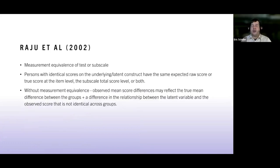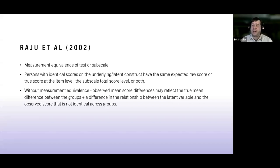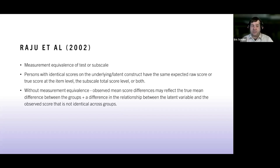From a measurement perspective, we're trying to achieve measurement equivalence — meaning different groupings within a population are using the test and responding in the same way. Persons with the same score on an underlying construct should be responding the same way to the items. If measures are non-invariant — if different subgroups are answering items differently even though they have the same construct level — then there's an issue with the measure.